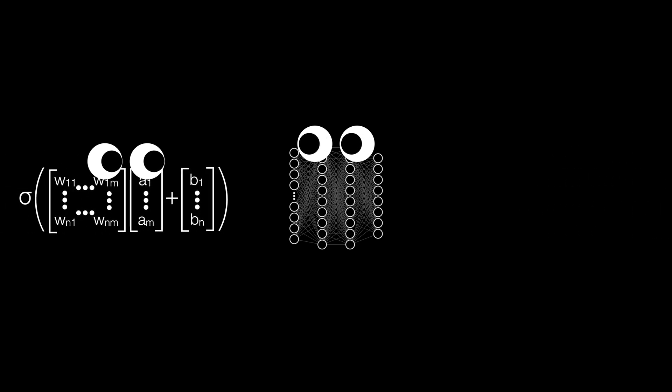But before we even make AI using DNA, what sort of tools do we need to make just the traditional AI? Specifically, the type of AI we're going to be making is called a neural network. If you are already familiar with this type of AI, feel free to skip to the next section of the video, otherwise, this will be a pretty good recap.